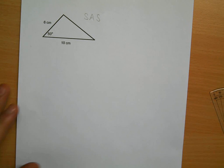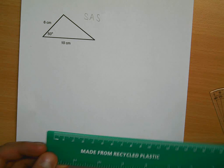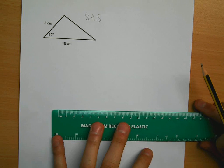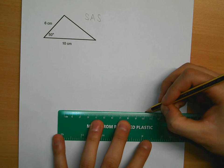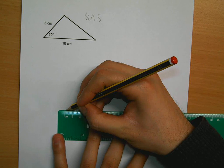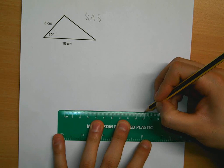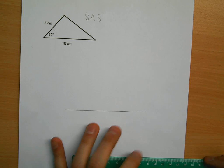We always start by drawing the baseline. I will draw a 10cm long line with space above it for the rest of the triangle, being as accurate as possible.